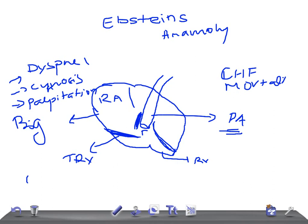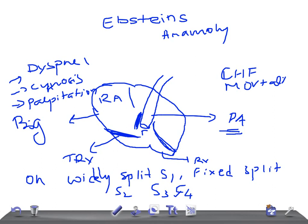So on hearing, on hearing the murmur, there will be widely split S1, fixed split S2, why, because of the pulmonary stenosis, and a variable S3 and S4.